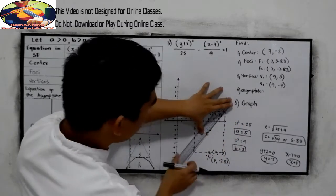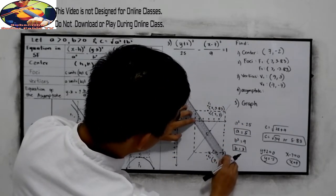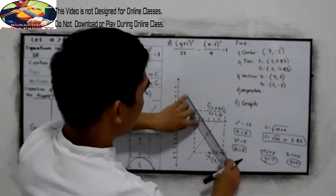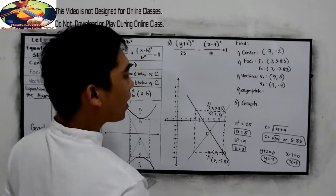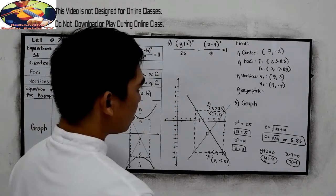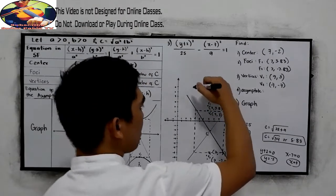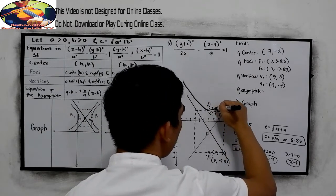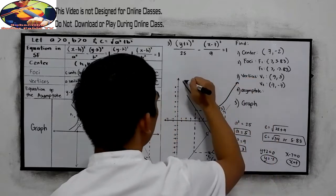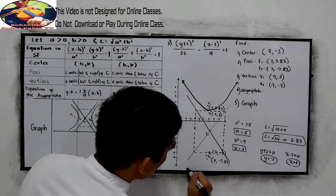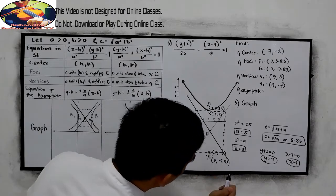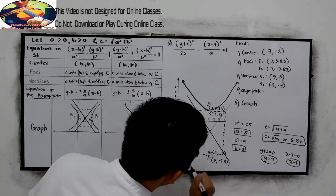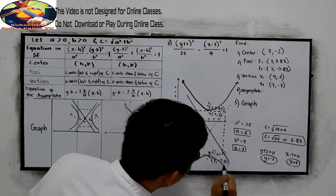That will pass through the center then. A straight line. And for this one, that will pass through the center. Like this one. And now ready to graph for your hyperbole. That is our hyperbole. Our point. That is our points here. Like that. That is our hyperbole.